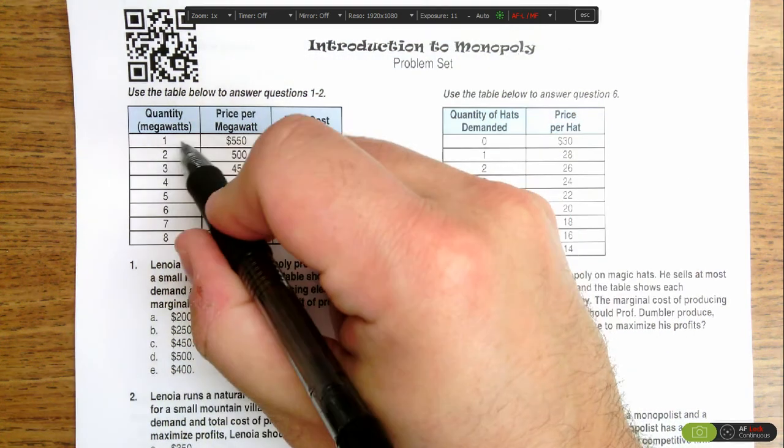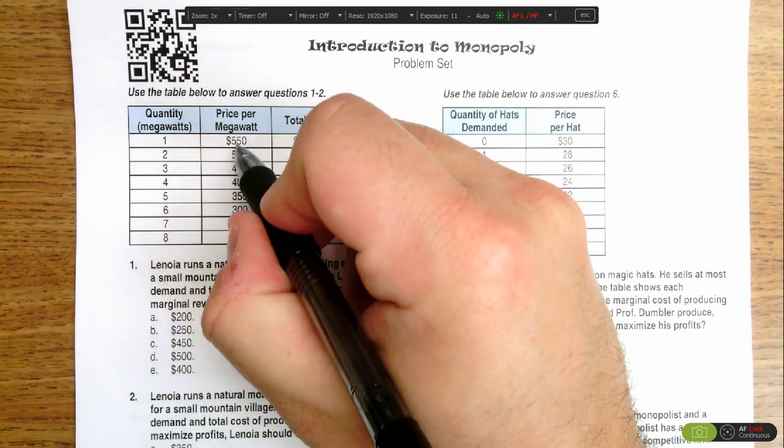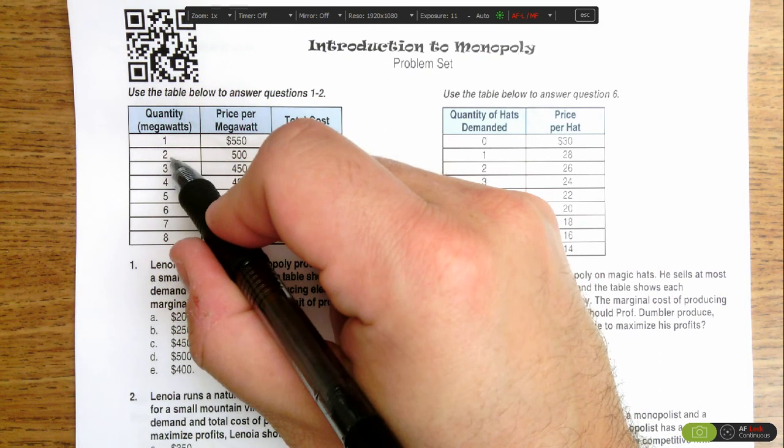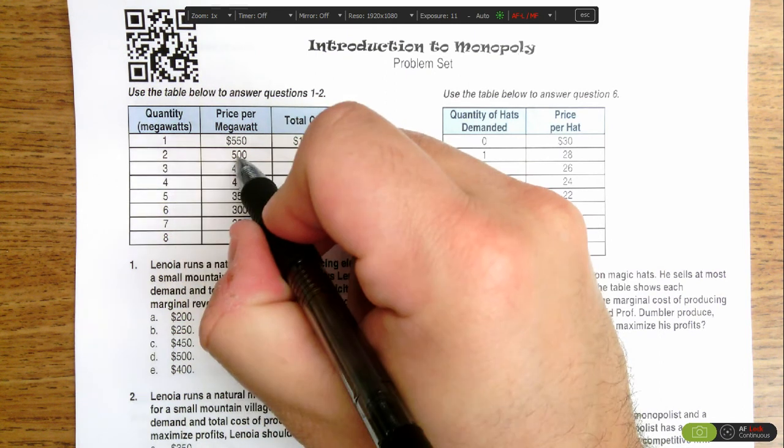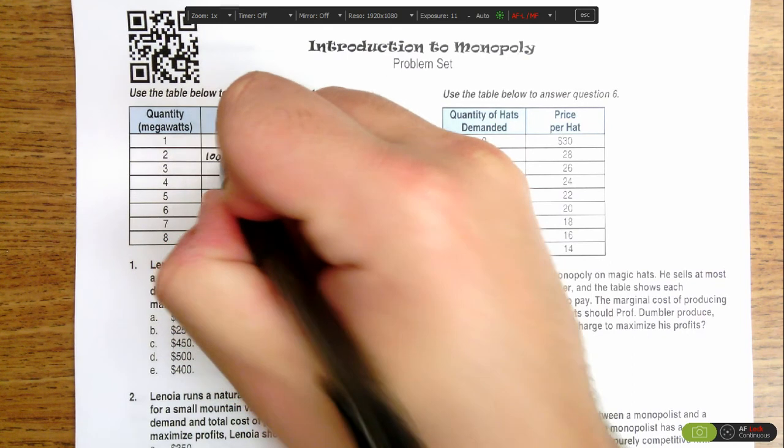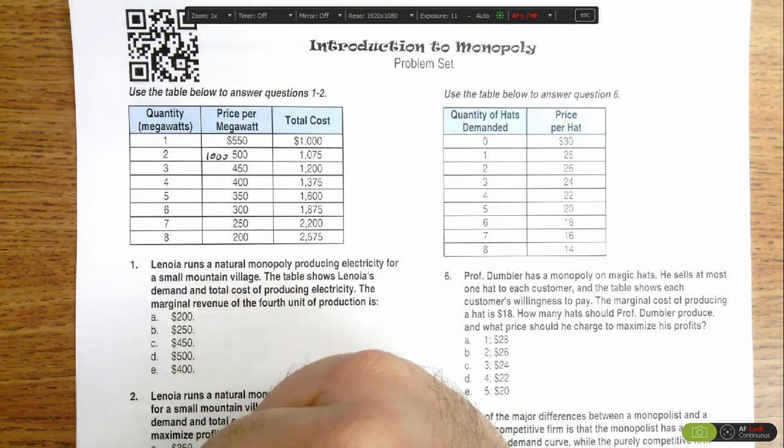Total revenue for the first megawatt is $550 because that's the price times the number of megawatts. If we use two megawatts, then each megawatt is $500 in cost. So the total cost here, or total revenue, is $1,000.